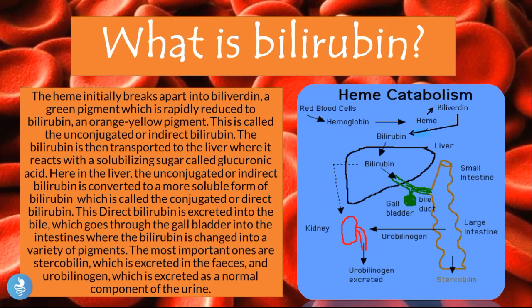In the liver, the unconjugated or indirect bilirubin is converted to the conjugated or direct bilirubin. This direct bilirubin is excreted into the bile, which goes through the gallbladder into the intestines where it is changed into a variety of pigments. The most important ones are stercobilin, which is excreted into the feces, and urobilinogen, which is excreted as a normal component of the urine.